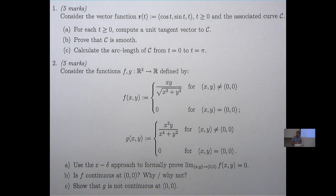So question one, we've got a vector function of one variable defined here, and we're asked to consider the function and the curve associated with that function. We're asked to compute the unit tangent vector to the curve, prove that the curve is smooth, and calculate the arc length of the curve from the point associated with t equals zero to the point associated with t equals pi.